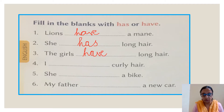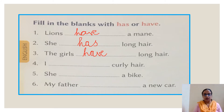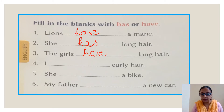Let's move on to the fourth sentence: I dash curly hair. I — what will we write with I? Have, not has. Have. I have curly hair.